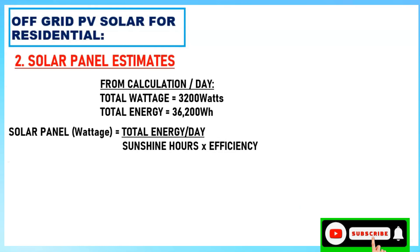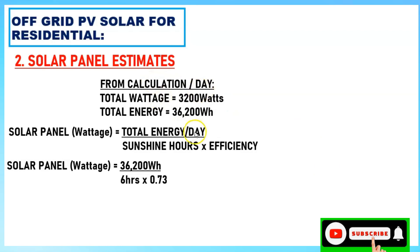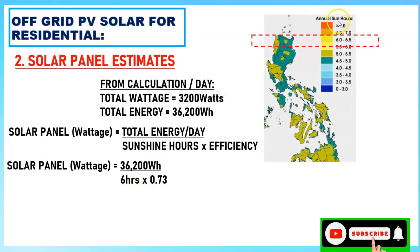The total energy per day is 36,200 watt-hours. The sunshine hours is 6 hours — this is based on Philippines annual sun hours data, which shows the average daily peak sun hours. The data shows most areas fall in the 6 to 6.5 hour range, so we use 6 hours as our estimate.